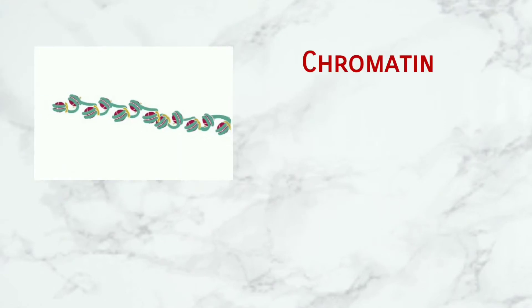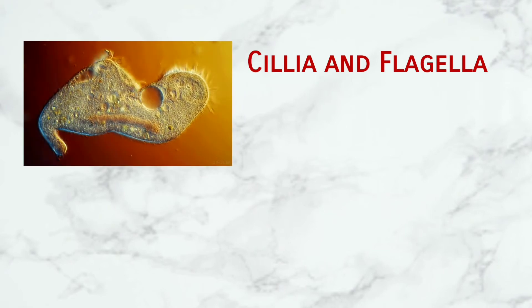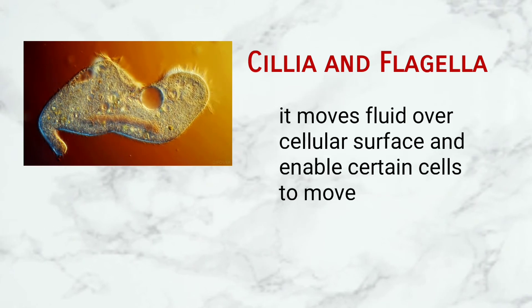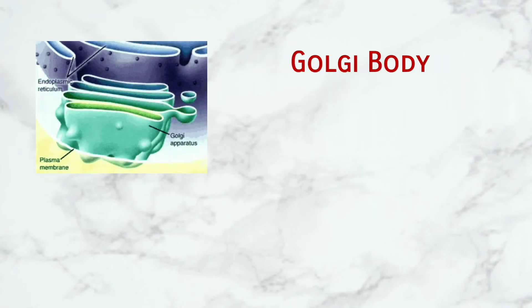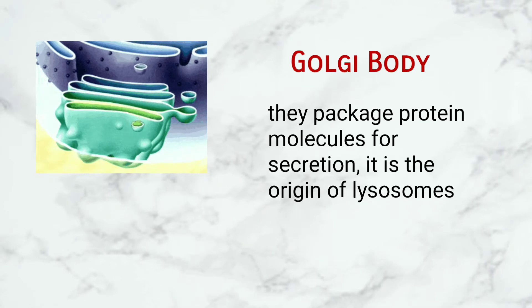Chromatin: The chromatin contains the genetic information for protein synthesis. Cilia and Flagella: Cilia and flagella move fluid over the cellular surface and enable certain cells to move. Golgi Body: The Golgi body packages protein molecules for secretion and is the origin of lysosomes.